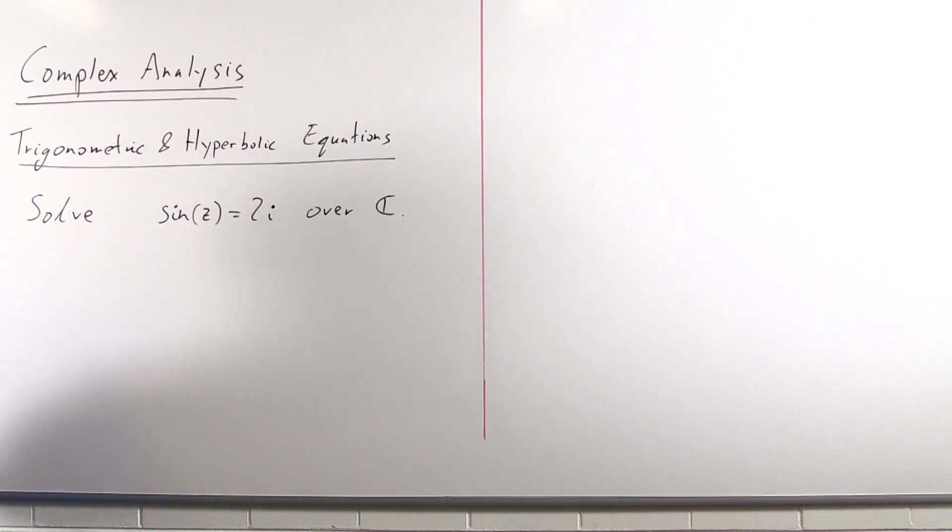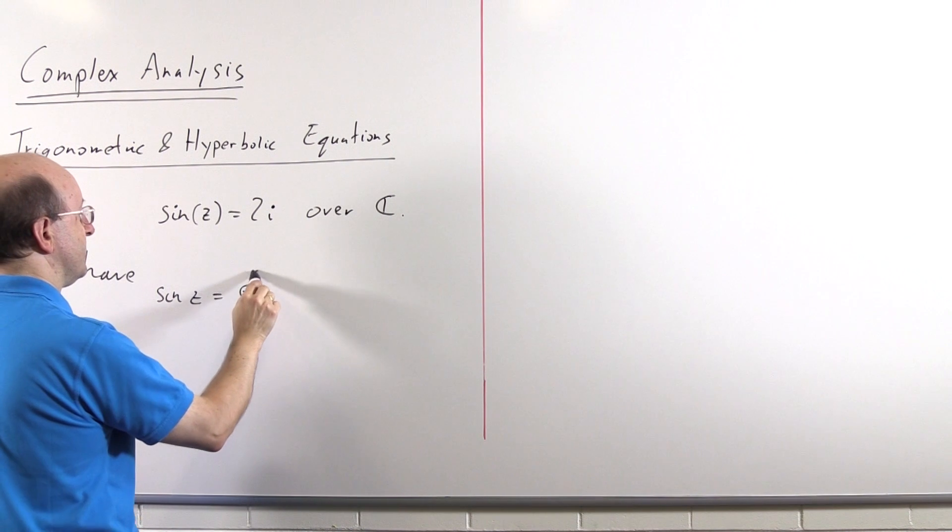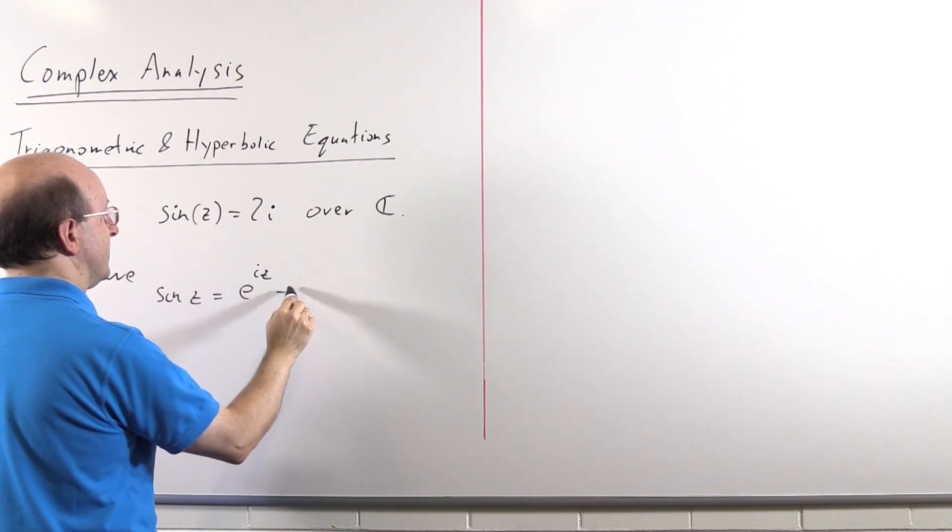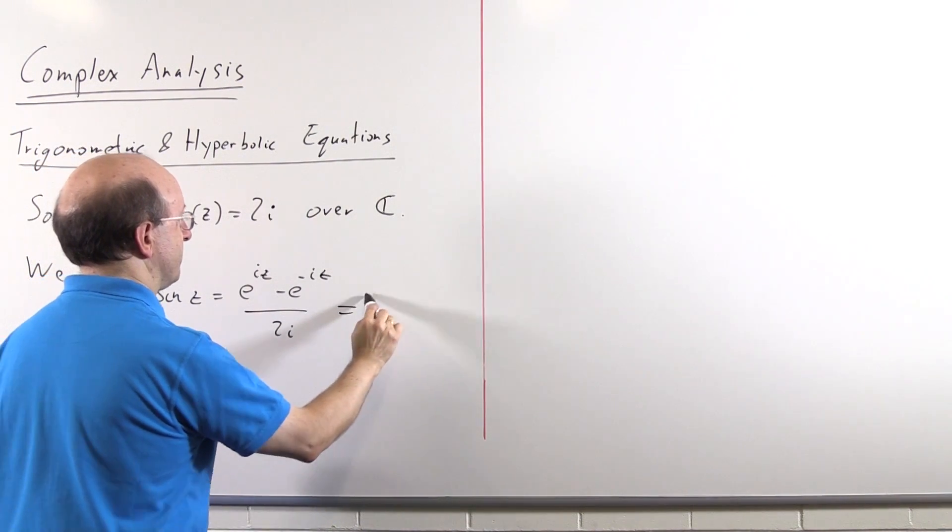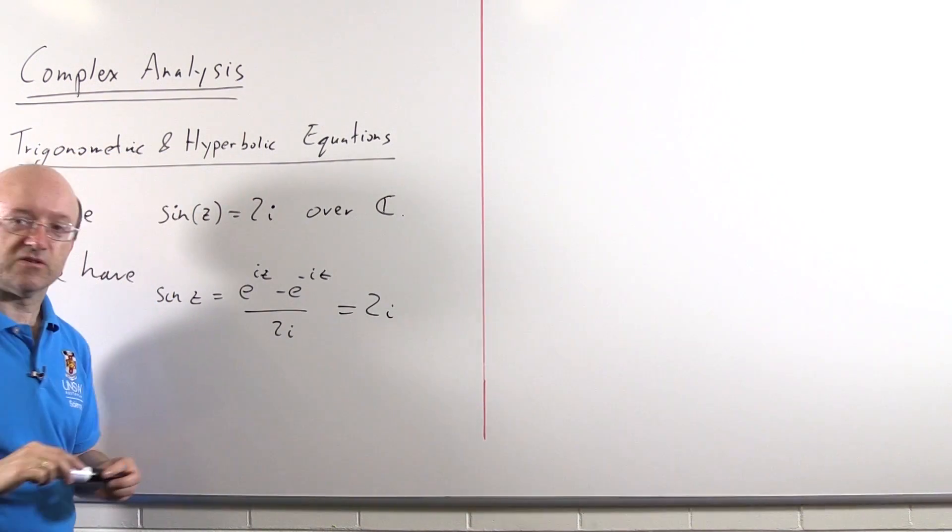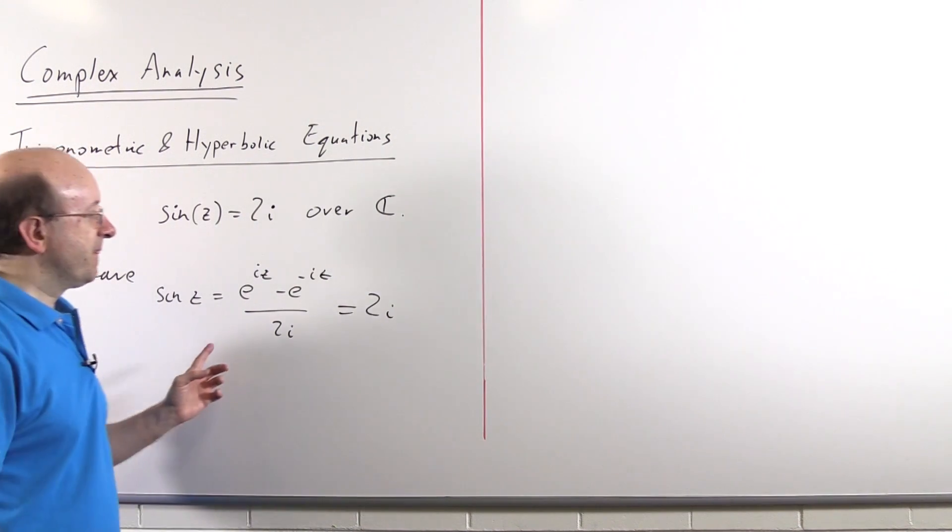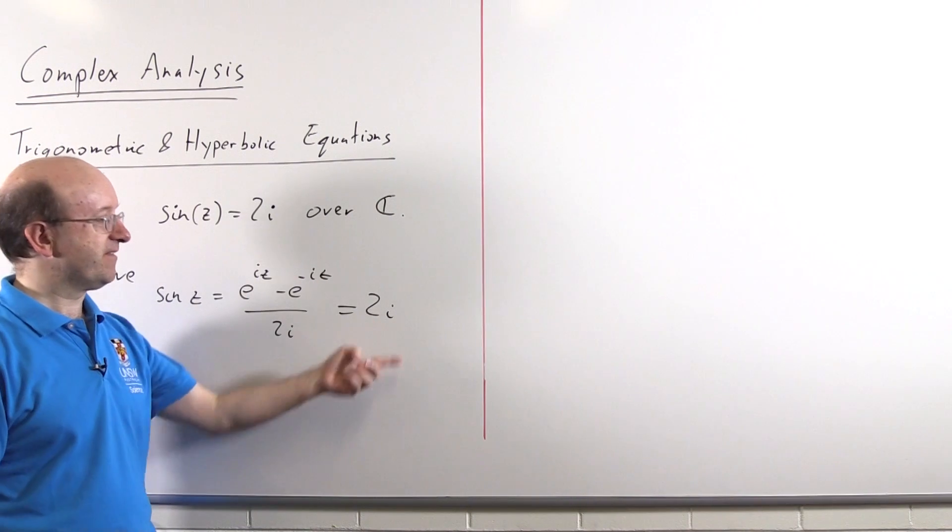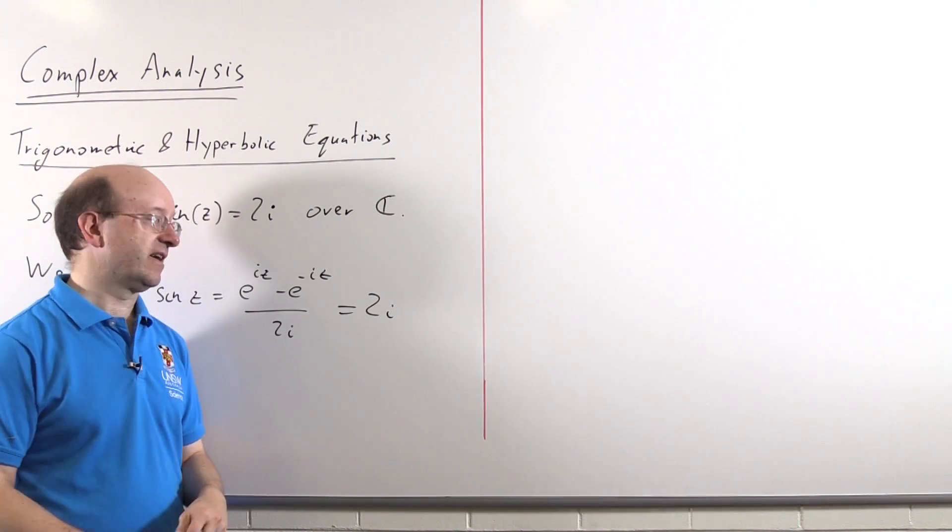So if we remember our definition, we have sine of z is e to the iz minus e to the minus iz over 2i and we're trying to find z such that that is exactly 2i. Well the point here when I said solving a quadratic, this is in fact a quadratic equation for e to the iz.